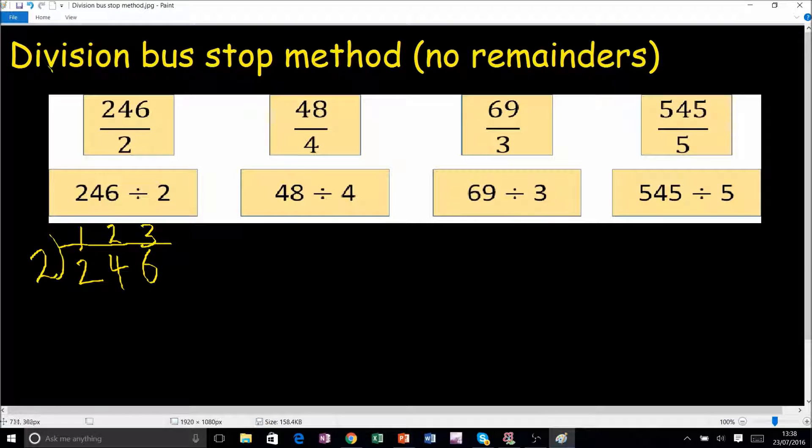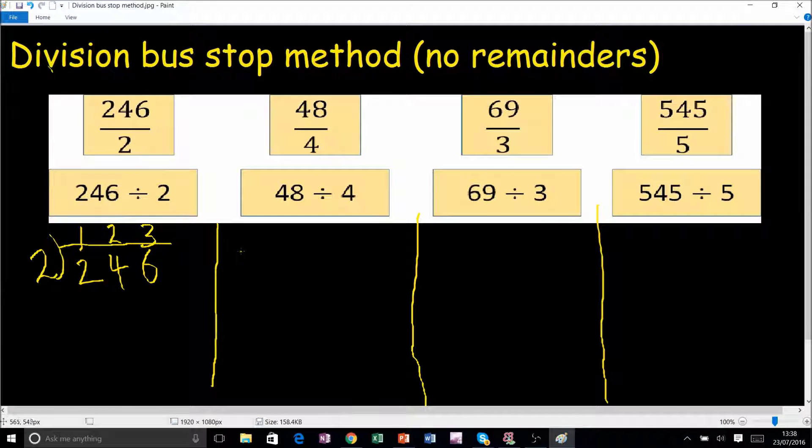Now let's jump onto the next one. We've got 4 and 48. So how many 4's go into 4? 1, remainder 0, but you don't really have to put it there. Then how many 4's go into 8? 2, remainder nothing. So that is our answer, 12.